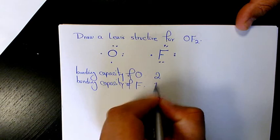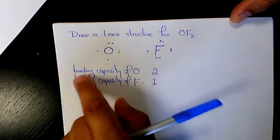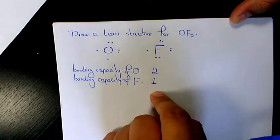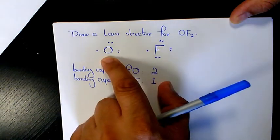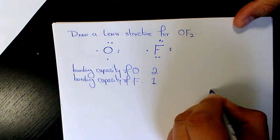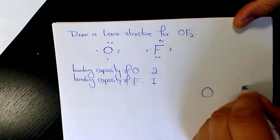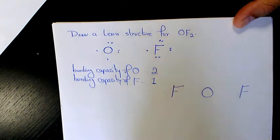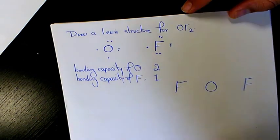Since the bonding capacity of oxygen is more than bonding capacity of fluorine, oxygen is going to be the central element and F is going to be the surrounding element. So it's going to be like that: O, F and F on both sides.